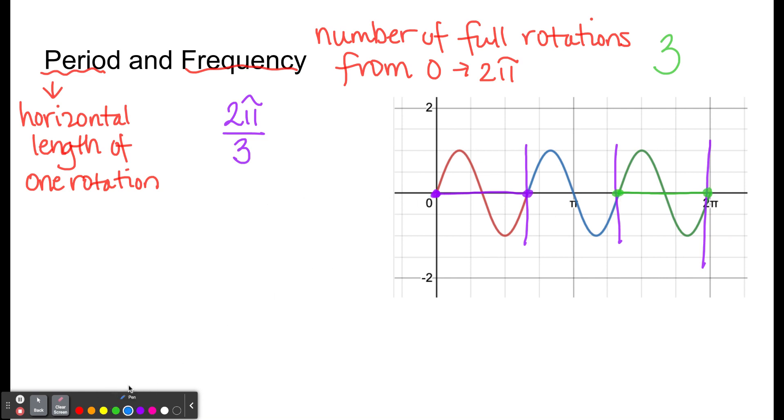So in general, we can say that the period is equal to 2π divided by the frequency. Since however many times we've rotated is what we're splitting 2π up into equally, equal points. So period equals 2π divided by frequency.